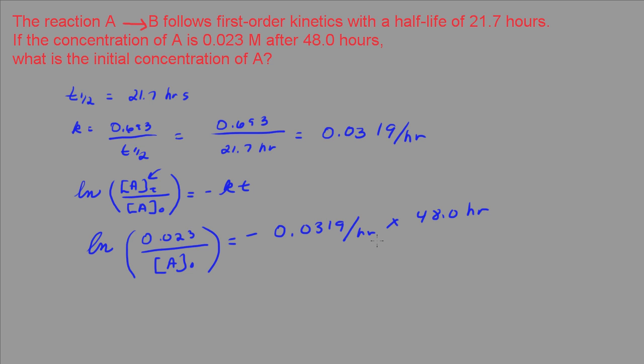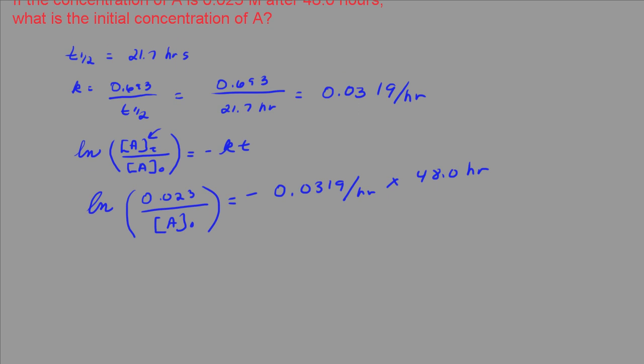Just make sure that your units of K are consistent with the units of time. In this case, it is. I'm going to go ahead and rewrite this, 0.023 over the initial concentration. This part, I'm going to calculate this, and I end up with a negative 1.5312 for this side.